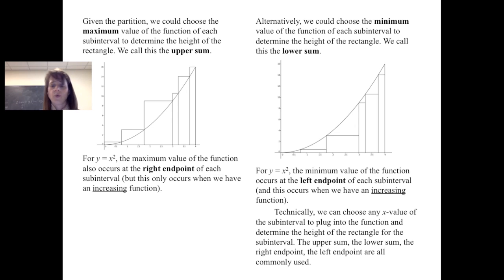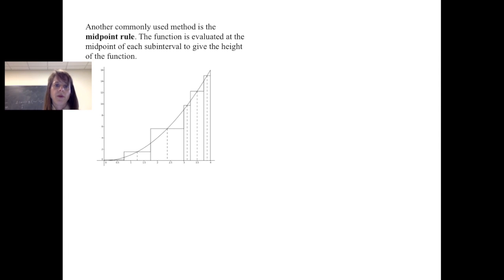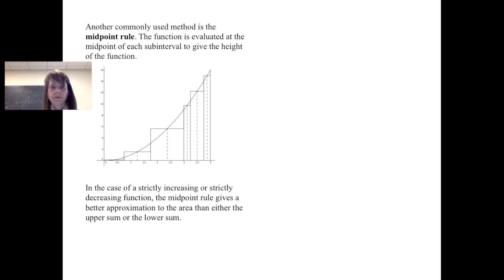We can choose whatever point we want within each subinterval. The upper sum, lower sum, right endpoint, and left endpoint are all commonly used. Another commonly used method is the midpoint rule, where the function is evaluated at the midpoint of each subinterval to give the height. When we have a strictly increasing or strictly decreasing function, the midpoint rule gives a better approximation to the area under the curve than either the upper or lower sum.